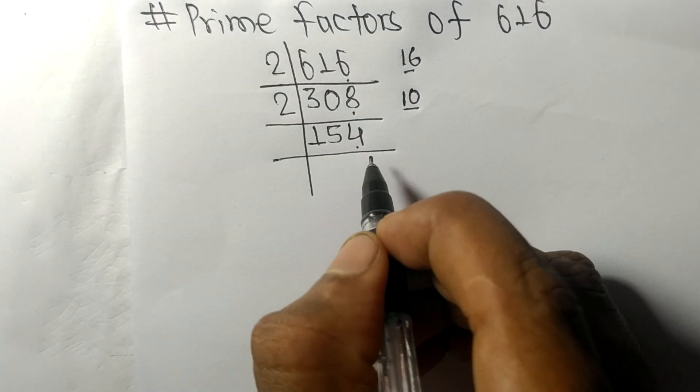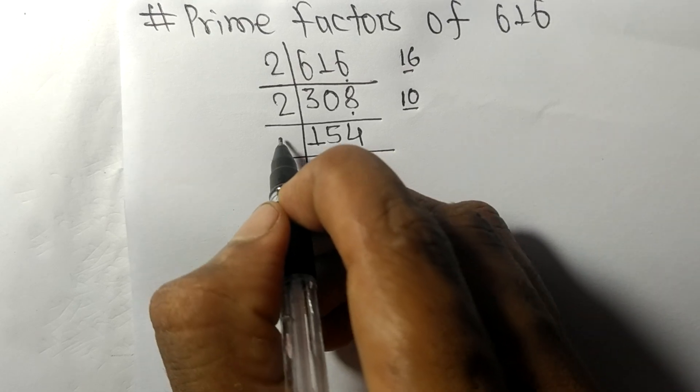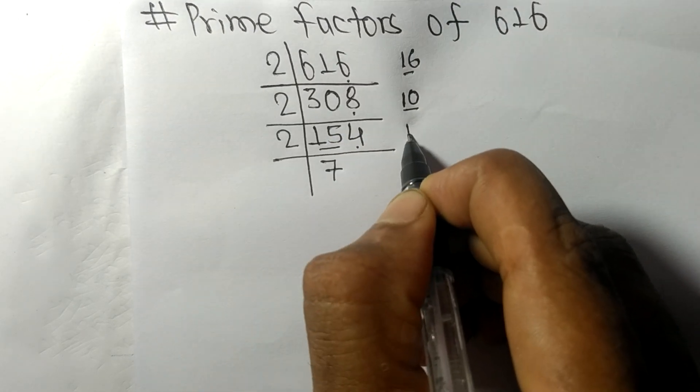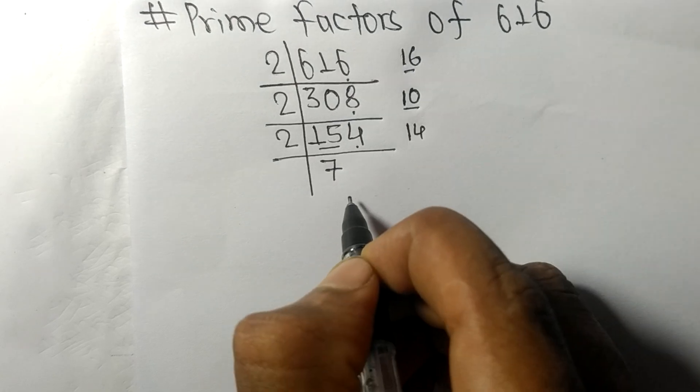Two times seven means fourteen remainder one, and this four. Fourteen, two times seven means fourteen.